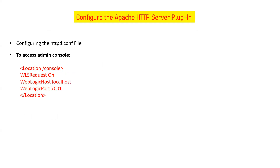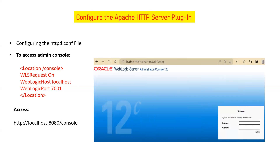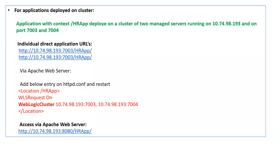Once the syntax is confirmed, configure the Apache HTTP server plugin for redirection by opening the 'httpd.conf' file. To access the WebLogic admin console through Apache, add a Location block with context '/console' pointing to WebLogic running on localhost port 7001. After restarting Apache, you can access the admin console using the web server URL and port — in my case, 'localhost:8080/console'.